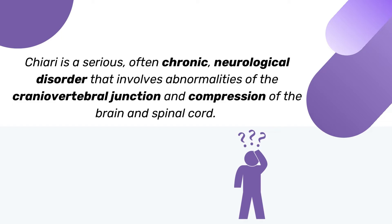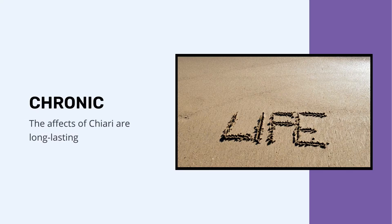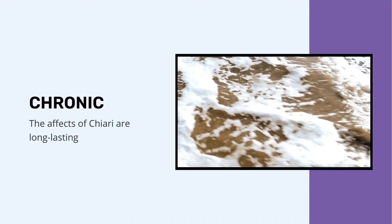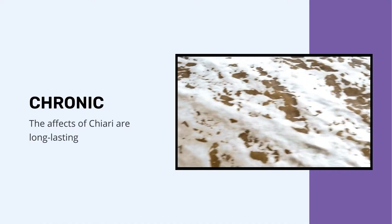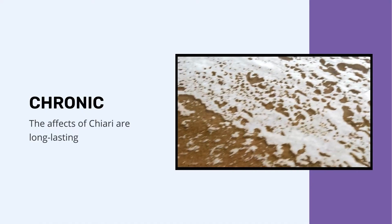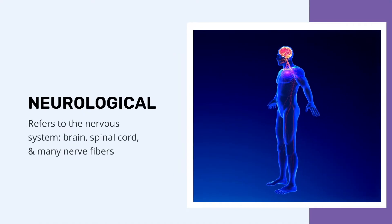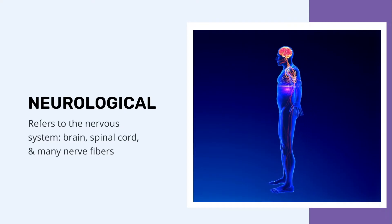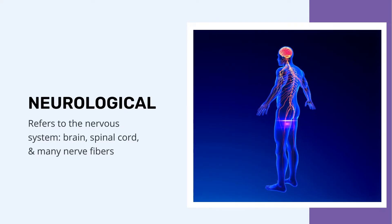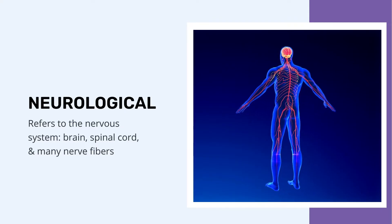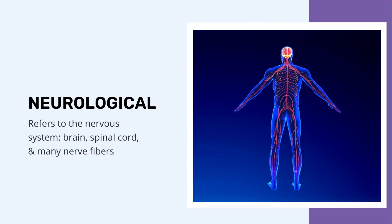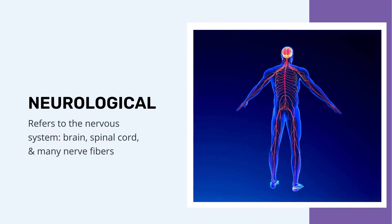So what does this mean? Let's break it down. First, chronic means that for some patients, the effects of Chiari are long-lasting, and Chiari is something they will deal with for their entire life. Second, the term neurological refers to the nervous system, which is comprised of the brain, spinal cord, and the many nerve fibers which run through our body.